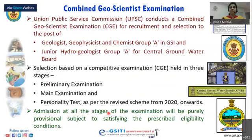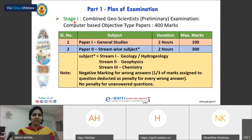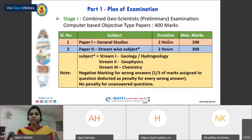Admission at all stages is purely provisional, subject to candidates satisfying the prescribed eligibility conditions. The stage 1 preliminary examination is a computer-based objective paper consisting of 400 marks total. Paper 1 is general studies, with a duration of 2 hours and maximum marks of 100. Paper 2 is a streamwise subject paper, also 2 hours duration, with maximum marks of 300.